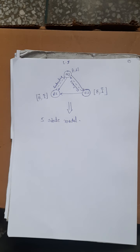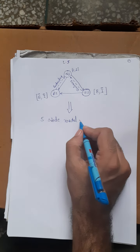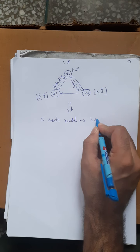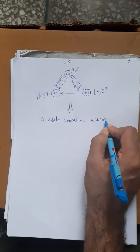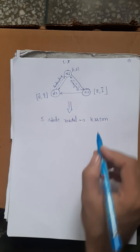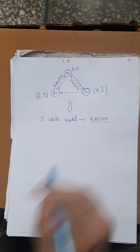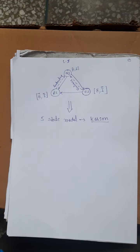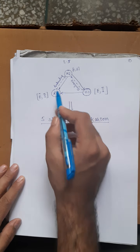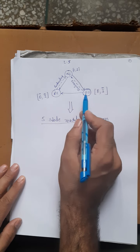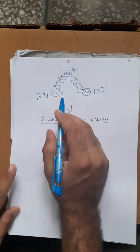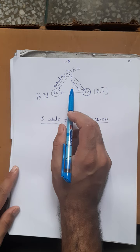So, the three-state model was discarded and a five-state model was adopted, given by Carson — also known as Carson's model. In the five-state model, the original three states were present and two more states were added.